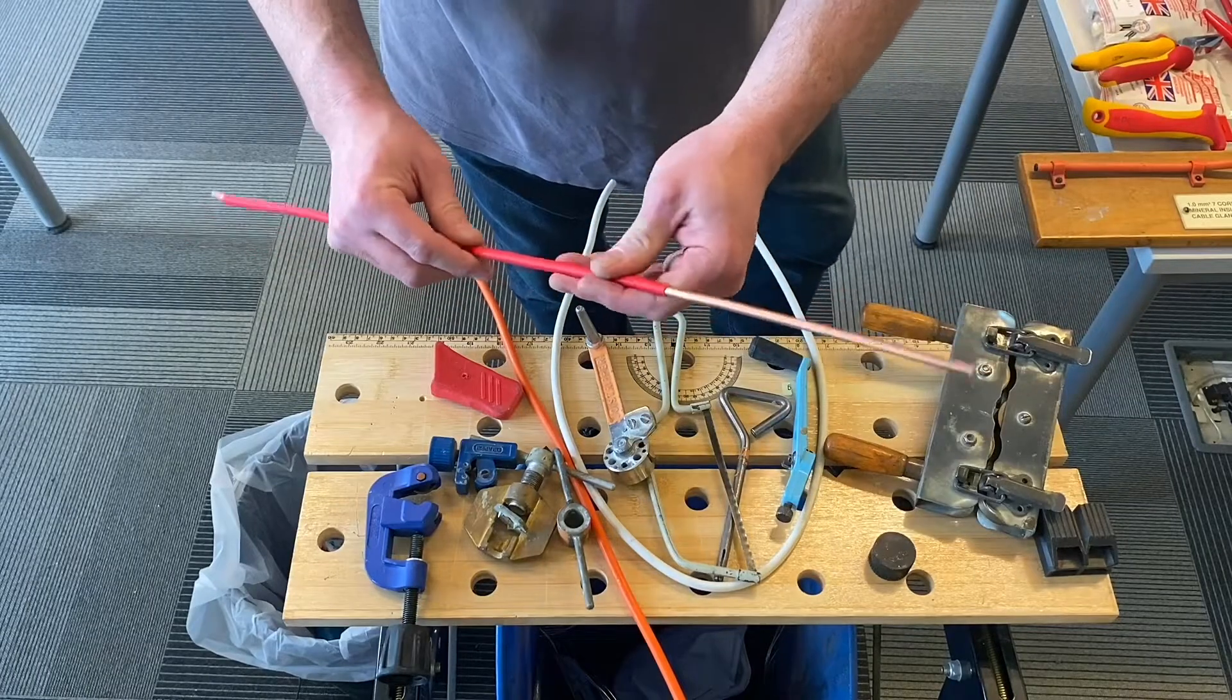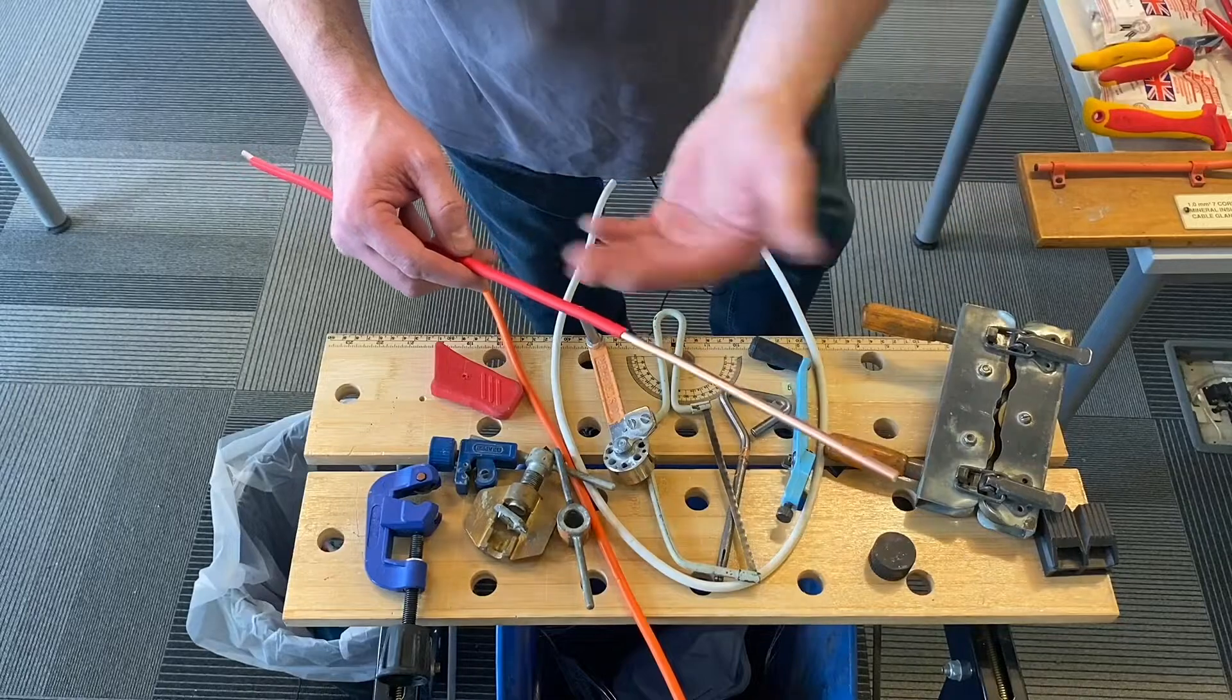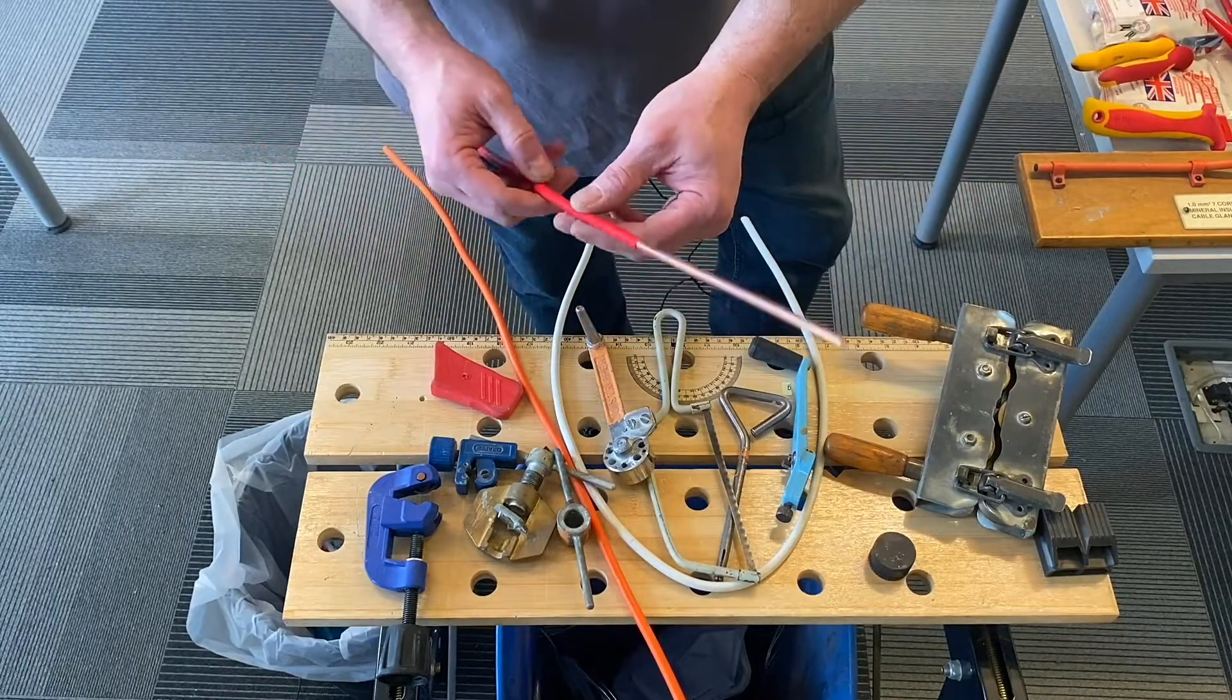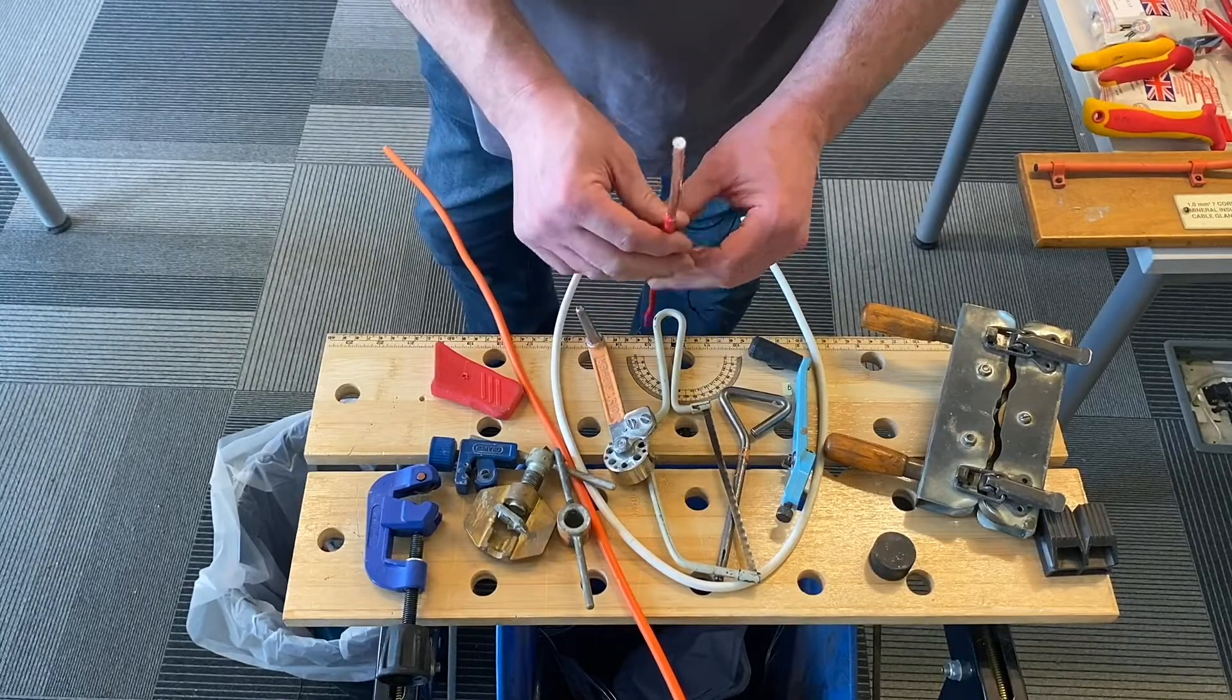If we were terminating the end, which this video is not about, we'd need the shroud to go on and parts of the gland. We're just going to work out how to get the outer copper off to expose the conductors in this video.